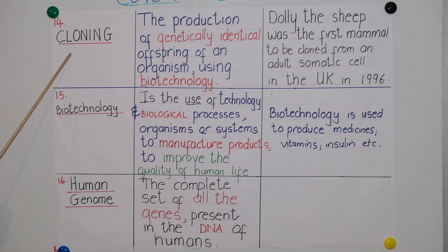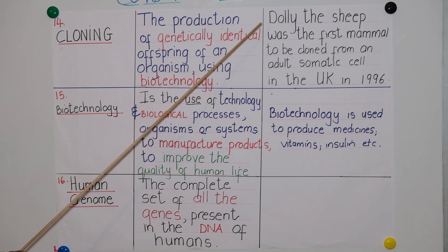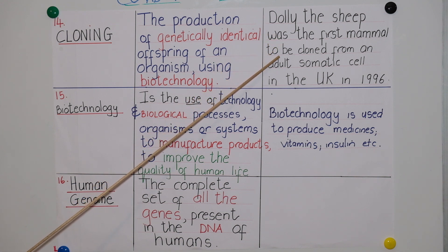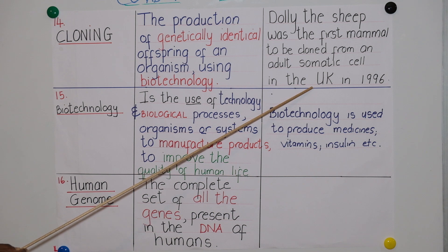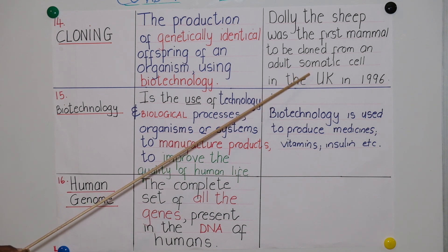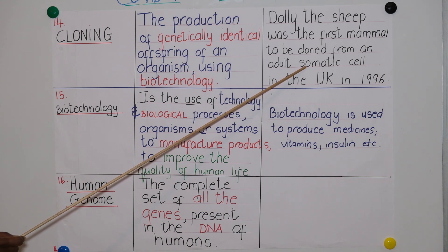The next concept is cloning. Cloning is the production of genetically identical offspring of an organism using biotechnology. For example, Dolly the sheep was the first mammal to be cloned from an adult somatic cell, in the United Kingdom in 1996. The sheep from which the somatic cell was taken is the nuclear donor, and Dolly was genetically identical to this nuclear donor because she received a full set of chromosomes from that sheep.